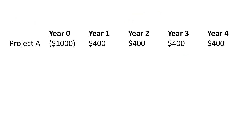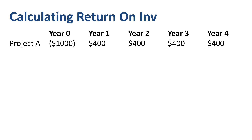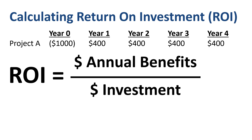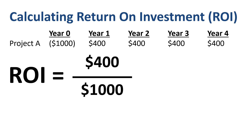Here's a project that we will use as the basis for all calculations. It has an upfront investment of $1,000, shown as a negative outflow, and four years of nominal benefits of $400 each, shown as positives. To calculate ROI, we take the annual benefits and divide them by the investment: $400 divided by $1,000 is 40%.